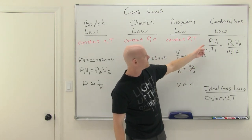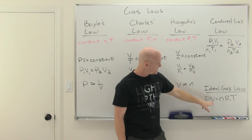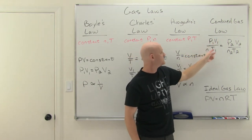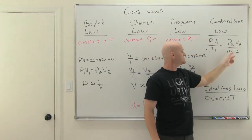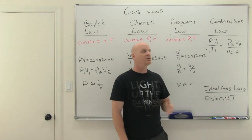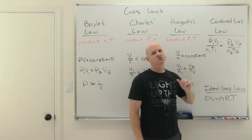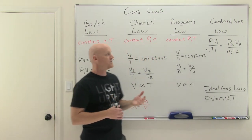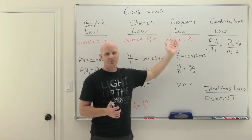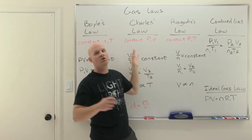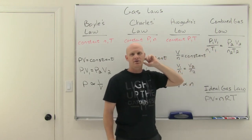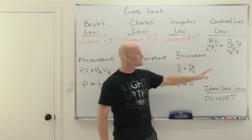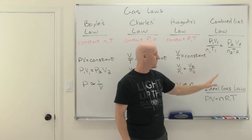Where the better combined gas law comes from: PV over NT equals R. So P1V1 over N1T1 equals R, and P2V2 over N2T2 equals R. If they're both equal to R, they're equal to each other. The calculations you're likely to do could use just Boyle's law, Charles' law, or Avogadro's law, but all three are combined into this combined gas law. Really, any calculation you're likely to see can be handled by either this better combined gas law or the ideal gas law.